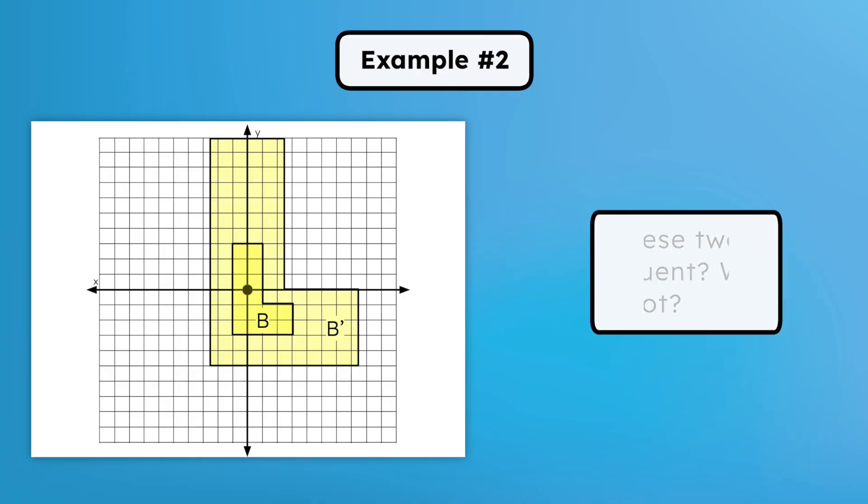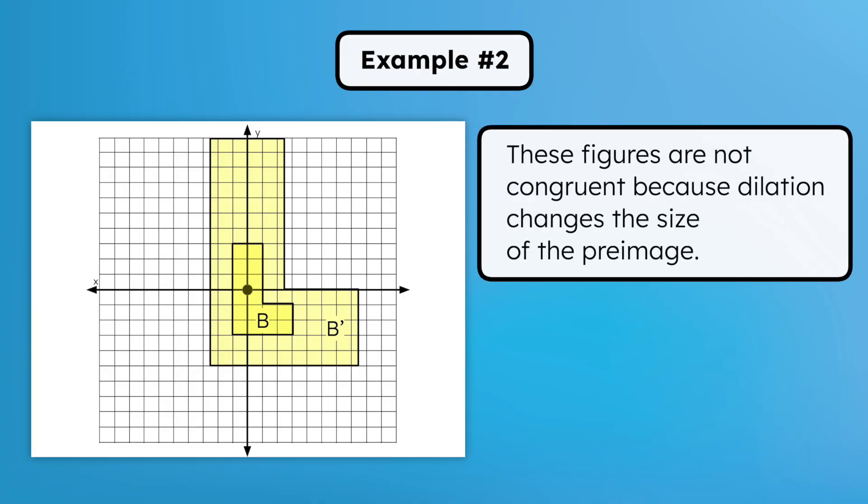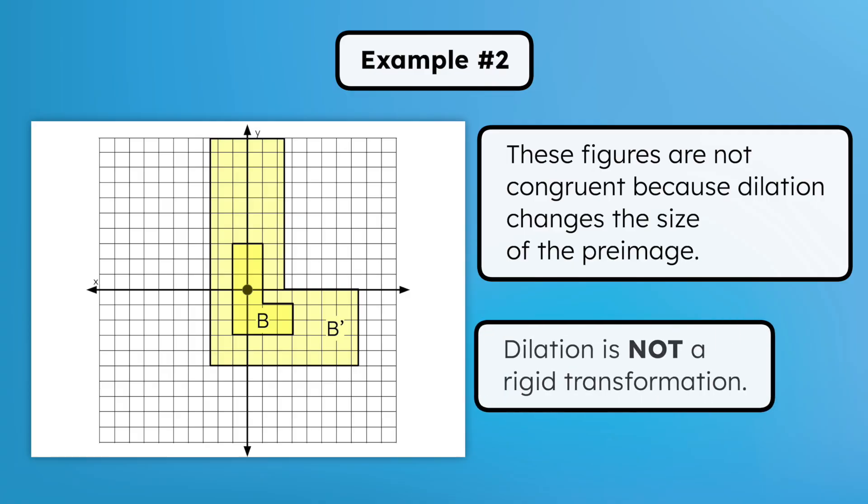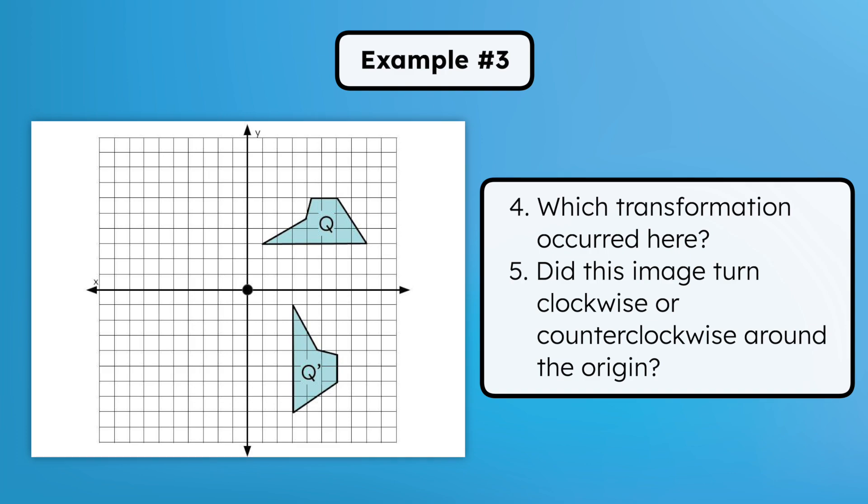These figures are not congruent because dilation changes the size of the pre-image. That's also why dilation is not a rigid transformation. Okay, final example.